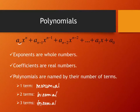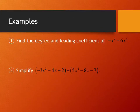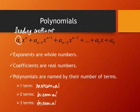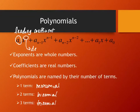A couple of other things: when polynomials are written in descending order of exponents — biggest exponent to smallest — the first coefficient is called the leading coefficient because it's in front. The exponent on that first term is called the degree. So this one right now has degree n.